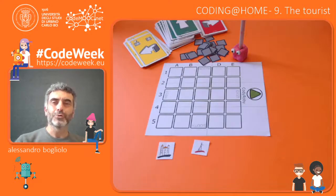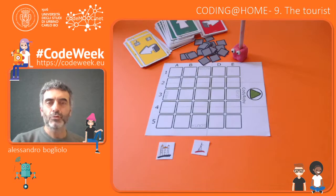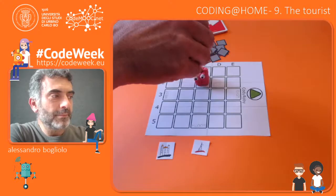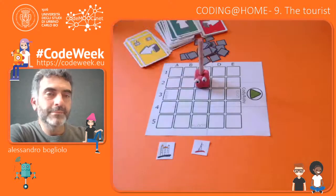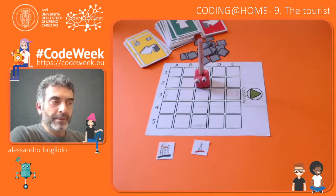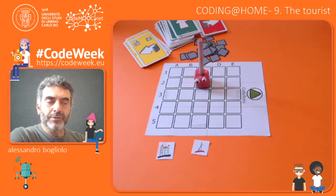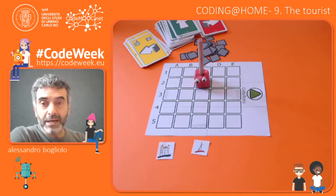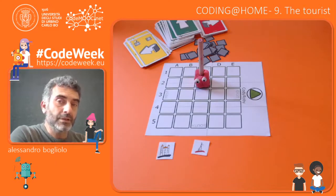Welcome back to Coding at Home. Today we are going to play a game called the Tourist, and our Tourist will be the robot Robbie that we met last time. But before explaining the rules of the game, let me remind you which are the instructions of our instruction set.